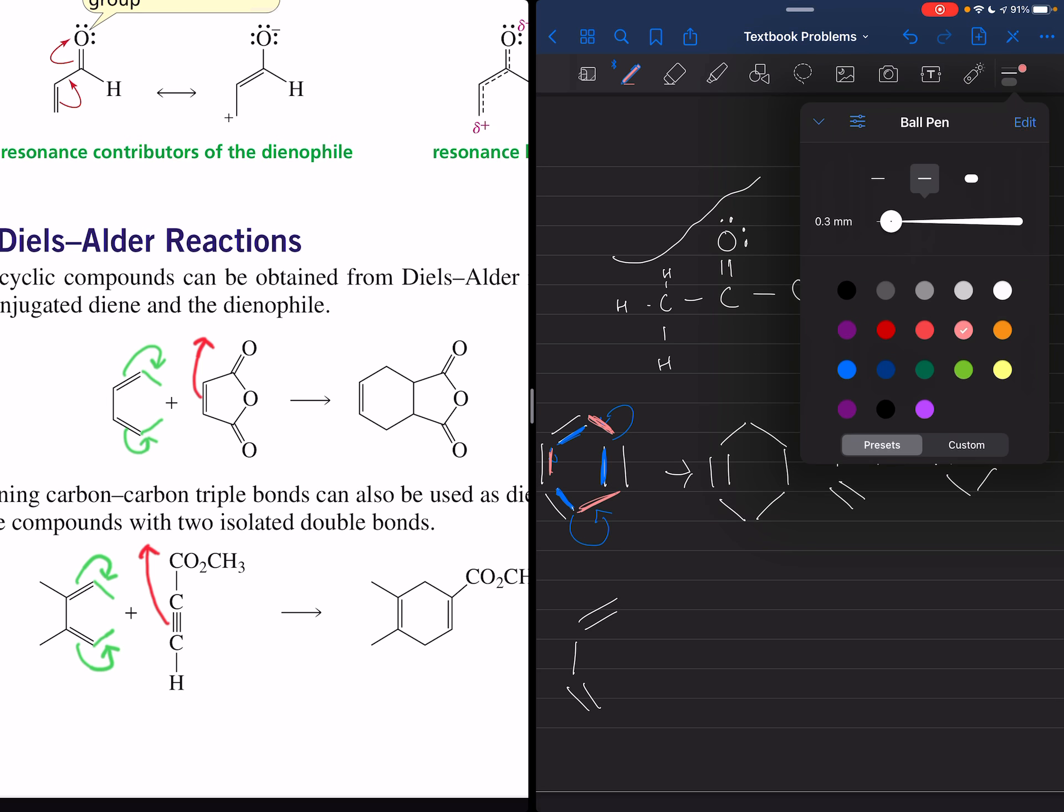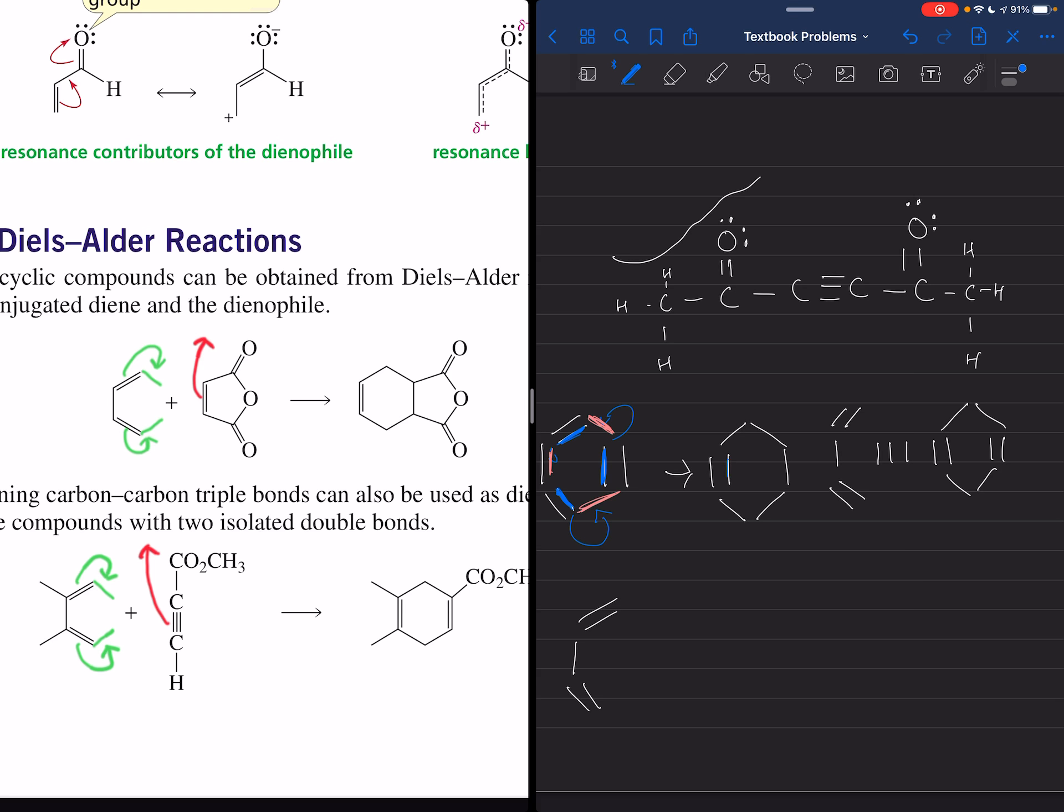This blue one becomes this bond. This blue one doesn't have a gap to fill and becomes this bond. Everything kind of rotates like a lock and key, and that's how that works. It doesn't really matter because bring in your triple bond, and you know what's going to happen is this is going to turn into this.